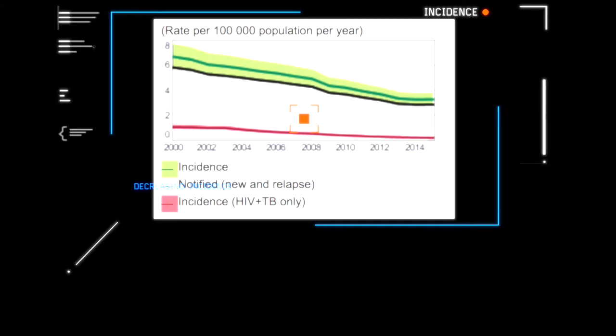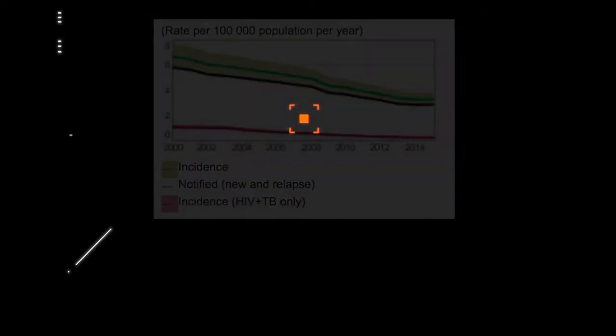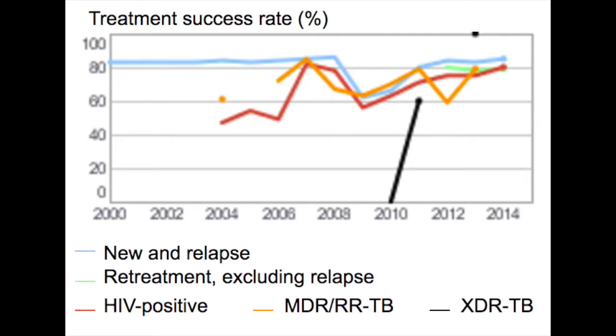The lower line, as you can see, is the incidence of those who have been affected with both HIV and tuberculosis, which represents the most susceptible population.